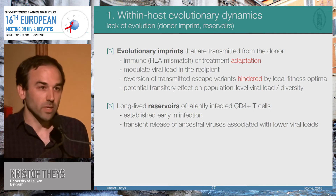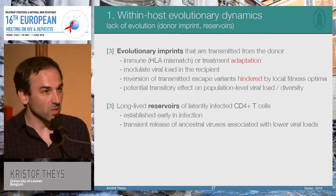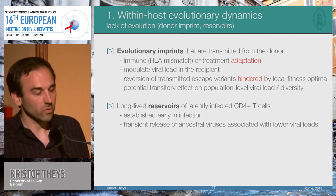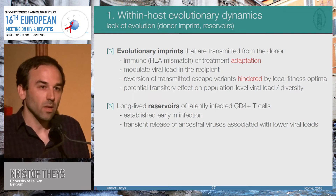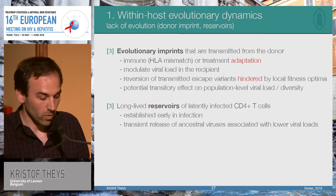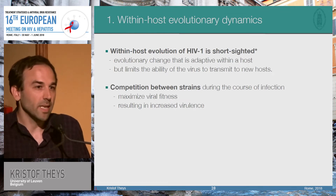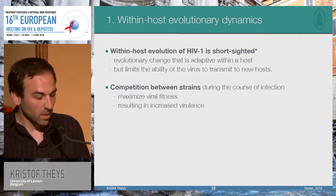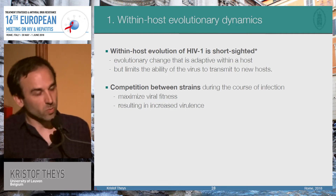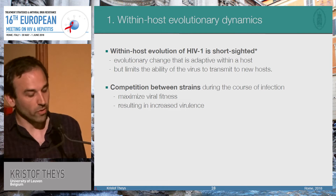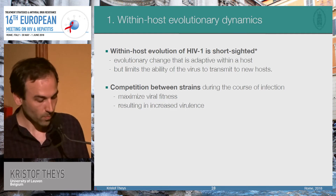Evolutionary imprints: when a patient gets infected with a virus from a donor that is specifically adapted to that donor's host — for example, to a specific HLA allele — and it's transmitted to a recipient with a different HLA allele, the virus is less adapted and may have more difficulty evolving because it's under more stringent selective pressure from the immune system. Reservoirs established early in infection release viruses that are not well adapted to the host and are associated with lower viral loads. In the end, it's very important to keep in mind that HIV within-host evolution is short-sighted: changes beneficial for a specific host can severely limit its ability to transmit to another host.